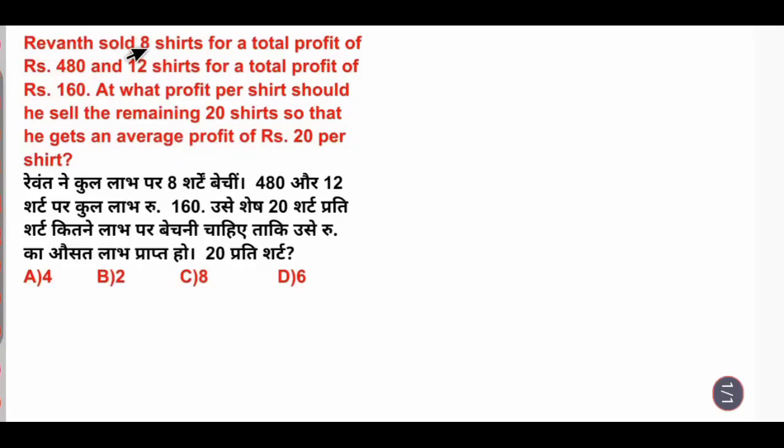Revenge sold 8 shirts for a total profit of Rs. 480 and 12 shirts for a total profit of Rs. 160. At what profit per shirt should he sell the remaining 20 shirts so that he gets an average profit of Rs. 20 per shirt?